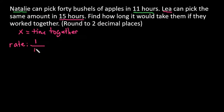So we would always set it up as one over the time it takes for that person. Let's go ahead and do this for each person. We would take Natalie first, and she completes one eleventh of a job in one hour. Because it takes her 11 full hours to complete this, she would do one eleventh of the job in one hour.